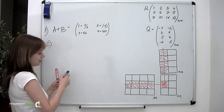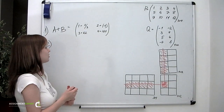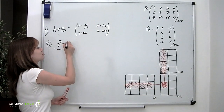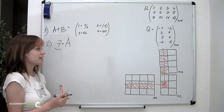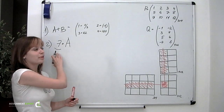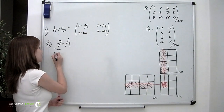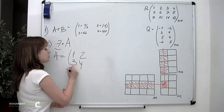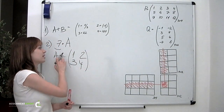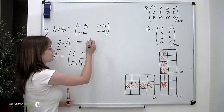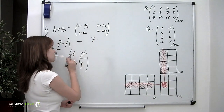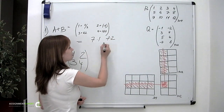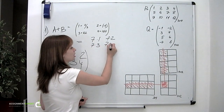And then comes multiplication by a number. This means that you have a constant and you try to multiply it by a matrix. To do that, you simply multiply this constant by each of the elements of the matrix. So if you have matrix A as defined at the beginning and you want to multiply it by 7, you multiply 7 by each element: 7 times 1, 7 times 2, 7 times 3, and 7 times 4.